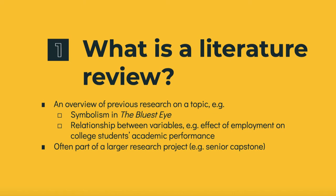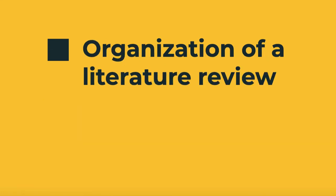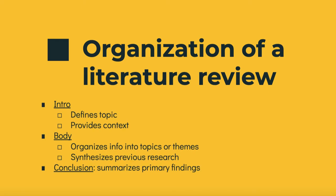Students may find themselves doing that as part of their senior capstone. In other classes, students may be assigned to write literature reviews in preparation for that type of assignment, or to demonstrate that they have familiarized themselves with the research in a particular area. In these different situations, the format of a literature review remains fairly consistent: an introduction that clearly defines the topic and establishes context, a body that organizes information into topics or themes and synthesizes previous research, and a conclusion that summarizes the main findings.